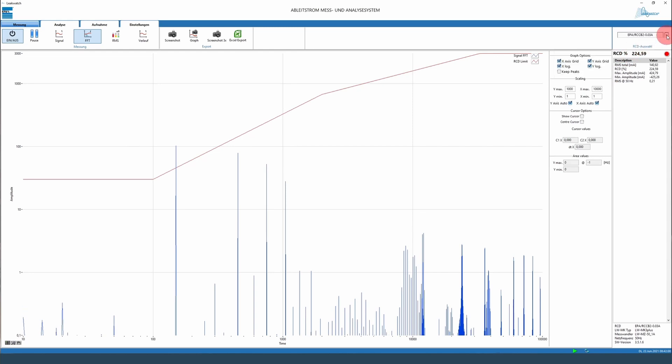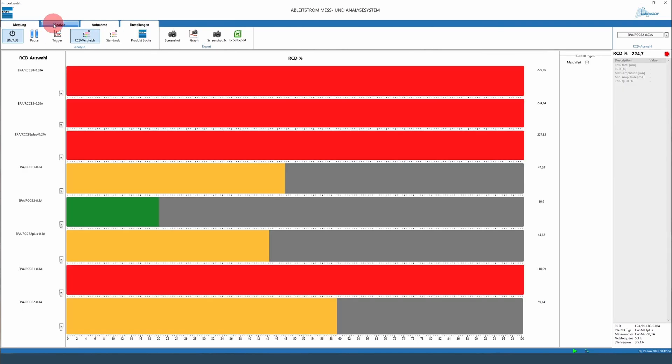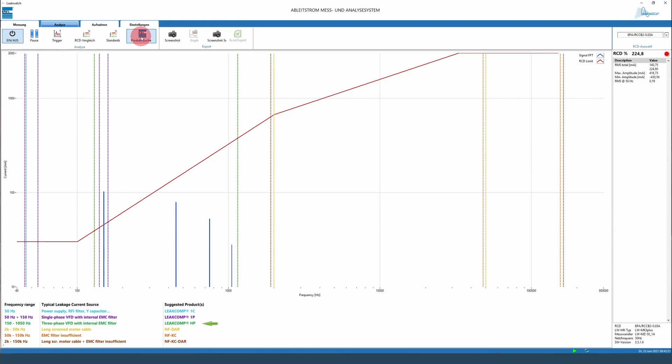Likewise, different RCCB types can be directly compared with each other in terms of utilization. The visualization is done via traffic light colors and a percentage bar graph. The trigger function allows short fast pulses to be recorded and subsequently analyzed in detail. By the way, the LWsoft also offers a product search for a measurement-related selection aid for suitable filter and compensation components from our company.